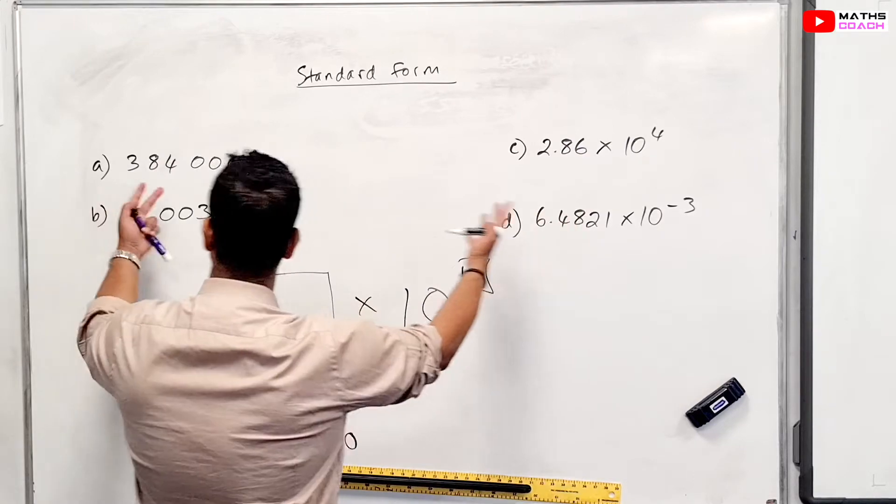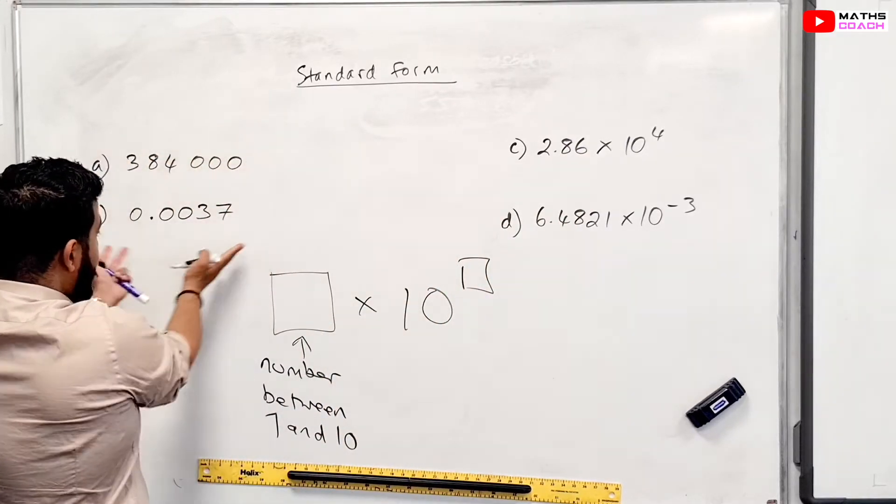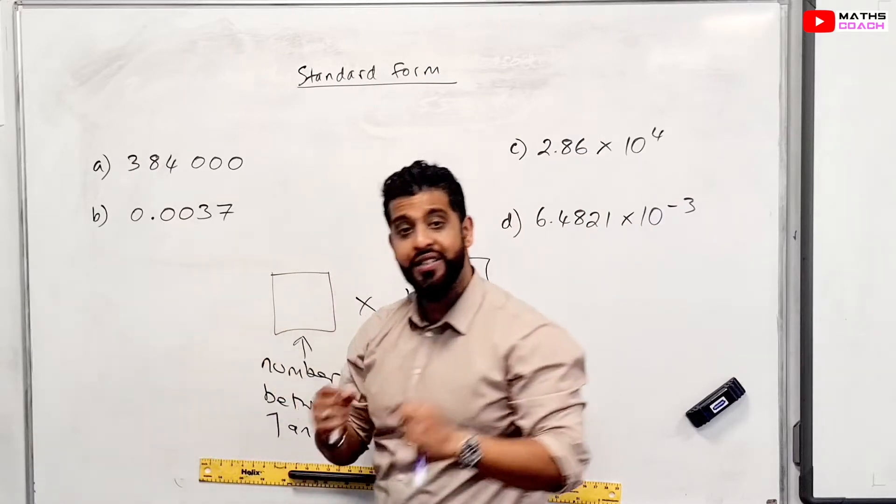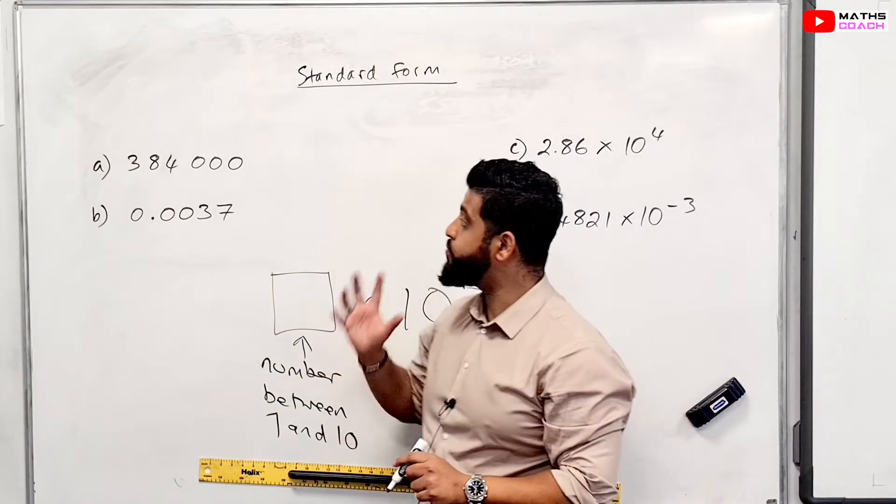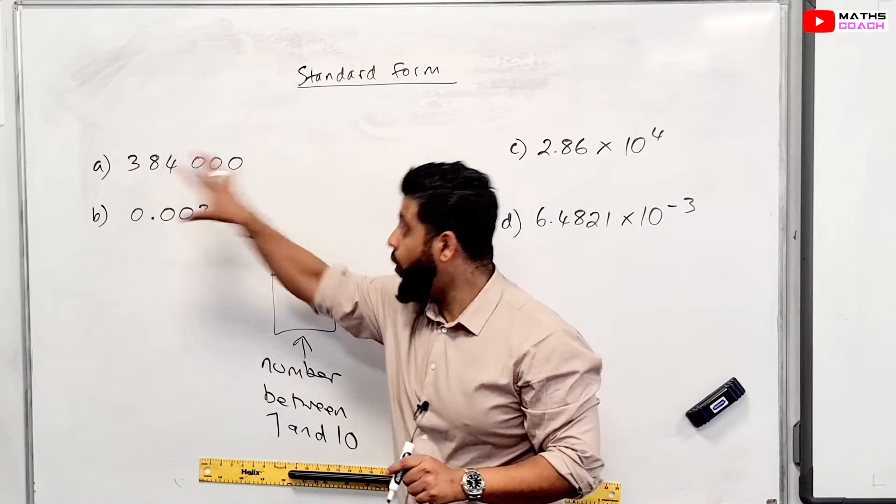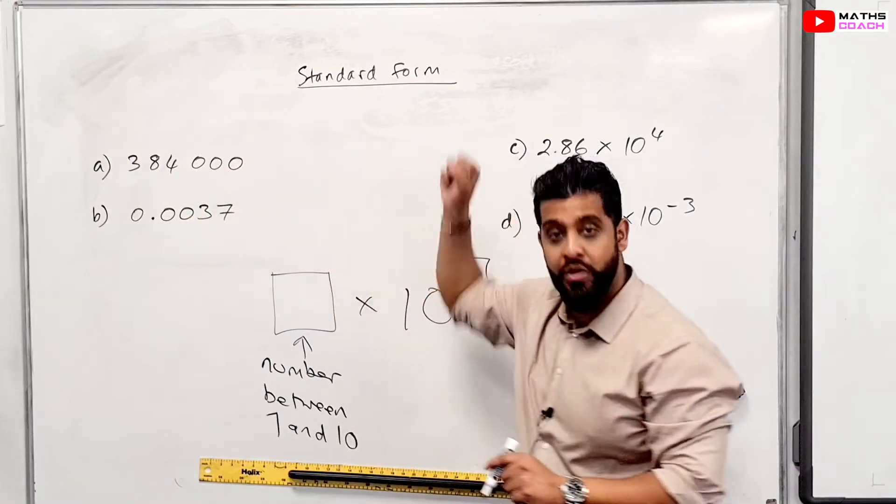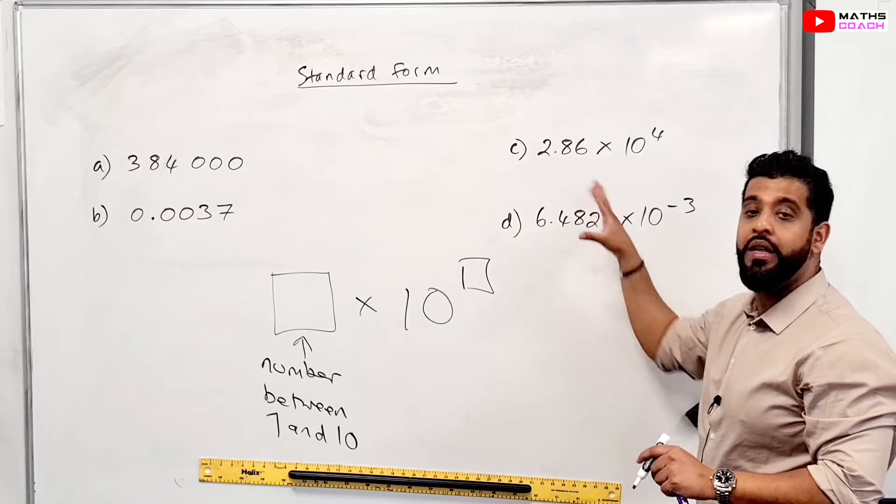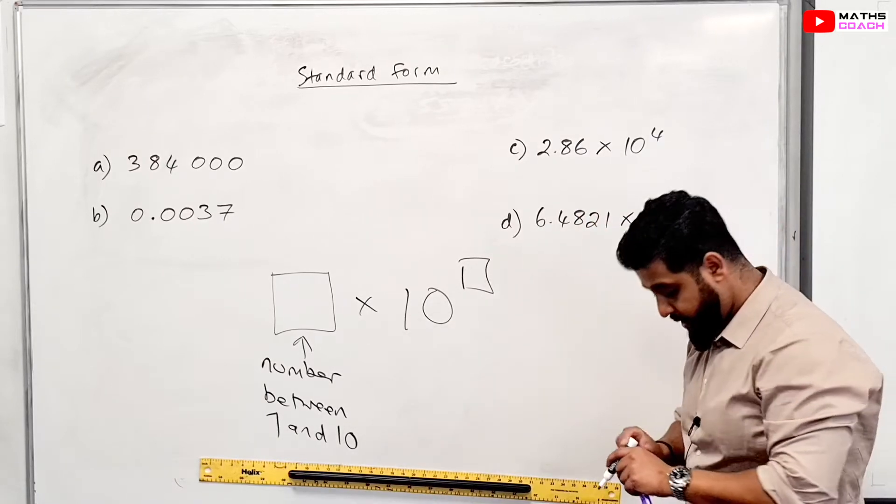You'll either have a positive index number here or a negative index number. And here are some examples. Now, this is an ordinary number and this is in standard form. So as our first exercise, I'm going to get you to practice writing an ordinary number into standard form and a number already in standard form into an ordinary number. So let's begin.